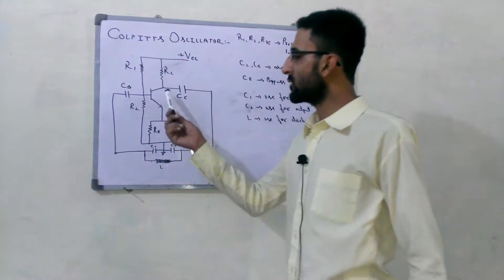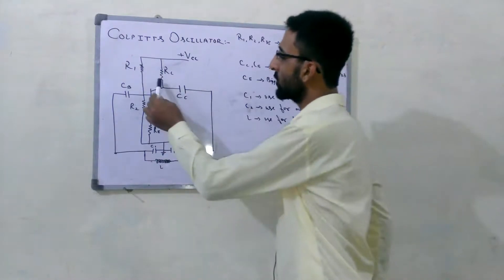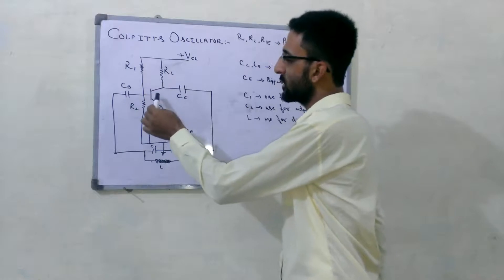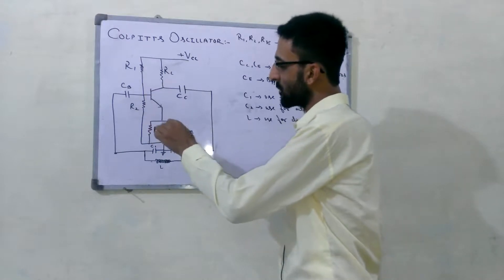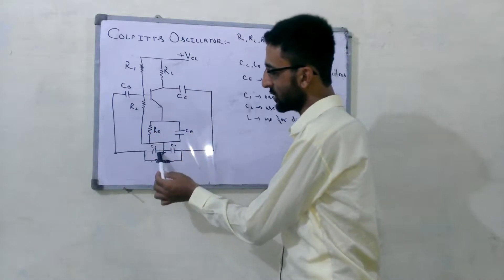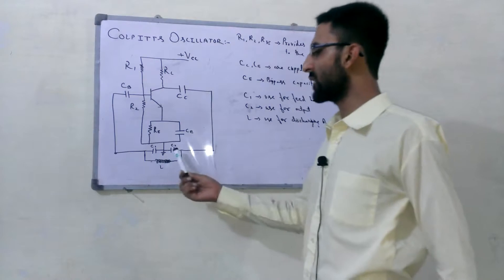And after the flowing of collector current, after biasing, the collector current flows and is charged, and it bypasses through this resistor, and then it reaches here in C1 and C2.